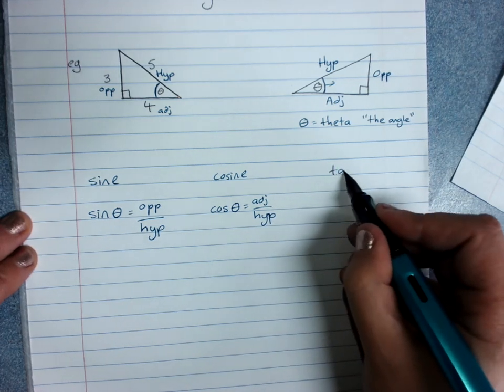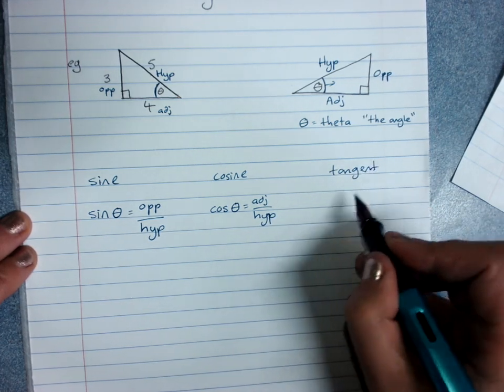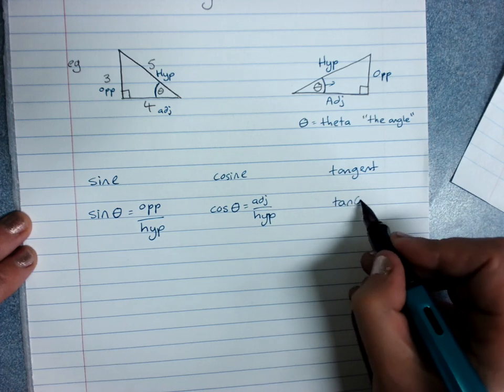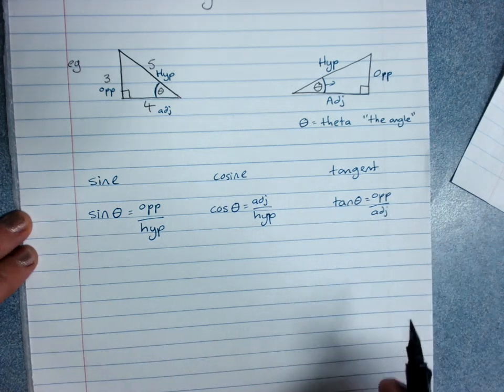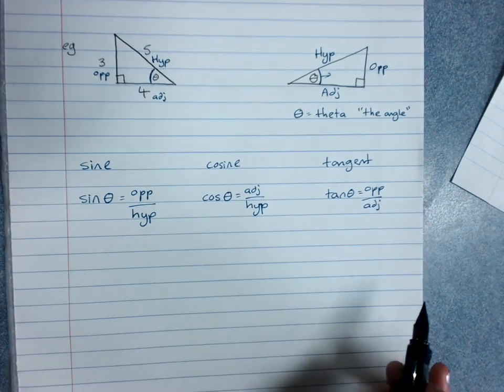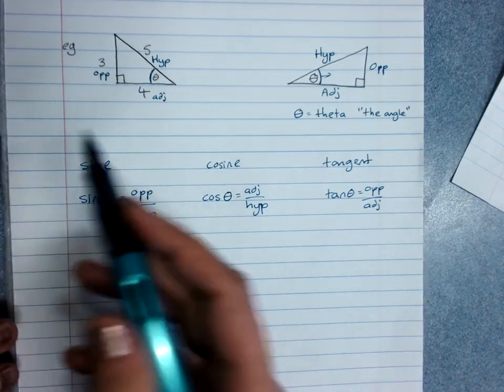And the tangent ratio, tan of the angle is opposite over adjacent. So it's just the three possible pairs of sides that we could have, and each one gets its own little name.